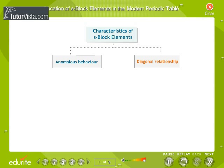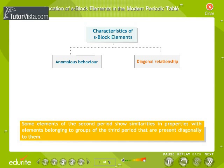The second important aspect is the diagonal relationship — the similarity in properties of elements present diagonally. Some elements of the second period show similarities in properties with elements belonging to groups of the third period that are present diagonally to them.